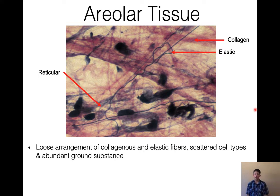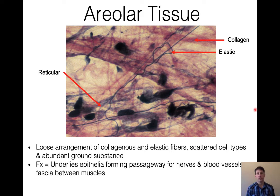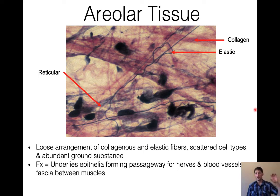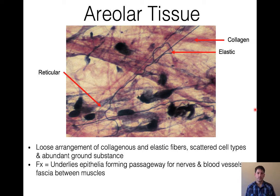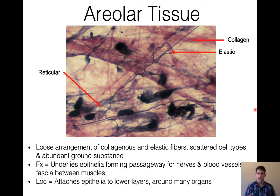This is areolar tissue, which is very important because it lies below our epithelial tissue and allows blood vessels and nerves to move through it. In epithelial tissue, cells are tightly adhered with almost no extracellular matrix, so there's no real room for blood vessels or nerves to penetrate. With areolar tissue, there's lots of room for blood vessels to migrate through. We see it attaching epithelial tissue to connective tissue layers below, and we find it surrounding some of our organs.